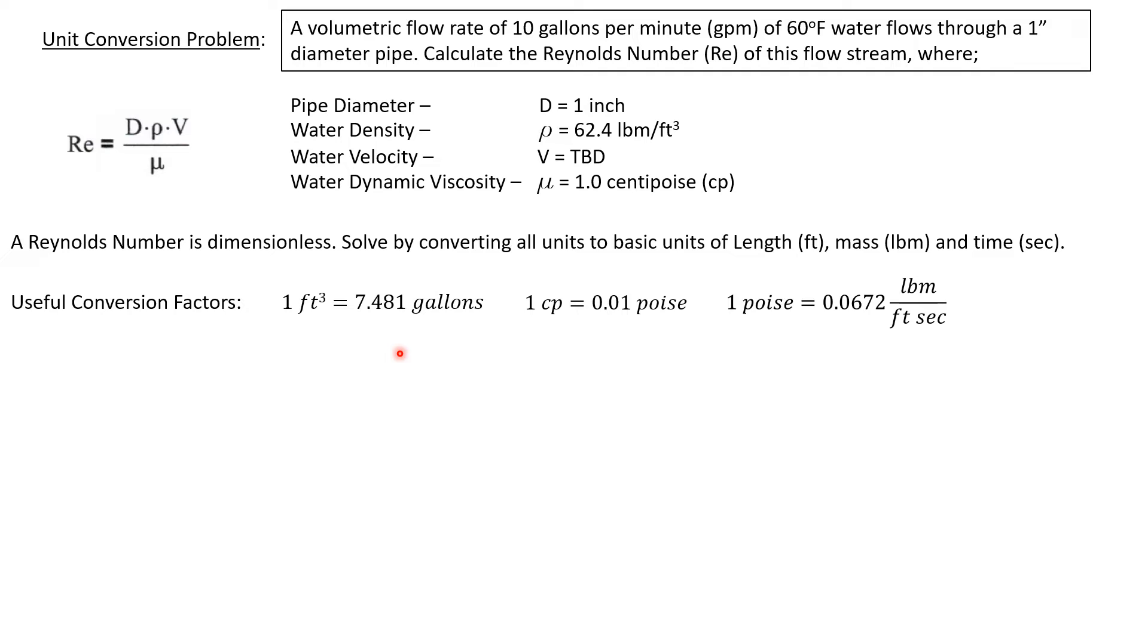We've got some useful conversion factors to do that. A cubic foot is equivalent to 7.481 gallons. A centipoise is of course a hundredth of a poise. And a poise is 0.0672 pounds mass per foot second.